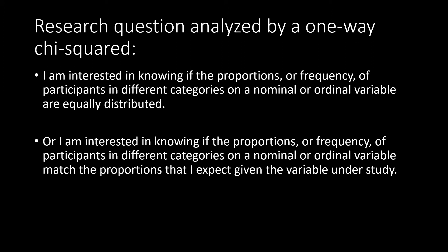A one-way chi-squared test will allow us to test two similar but different research questions. The first is testing if the proportions or frequencies of participants in different categories on nominal or ordinal variables are equally distributed. The second is testing to see if those proportions or frequencies match the proportions expected given the variable under study.